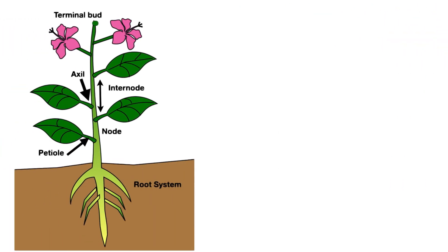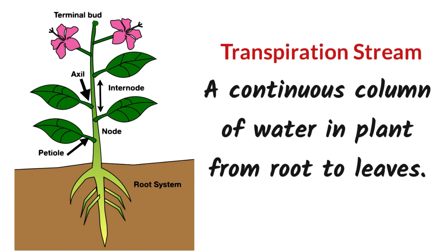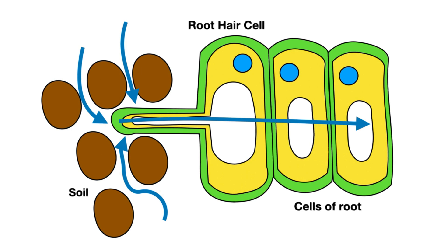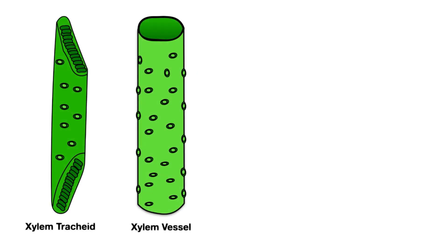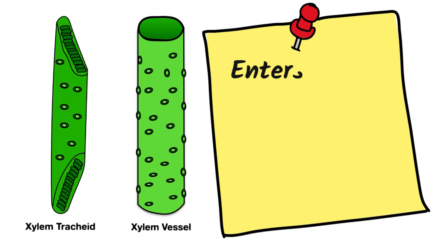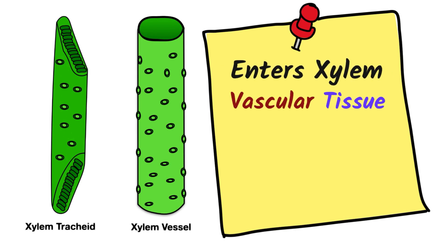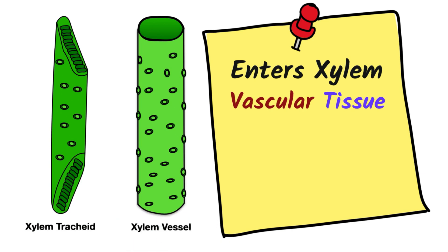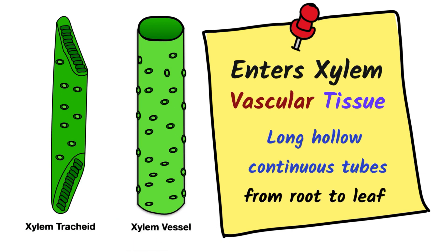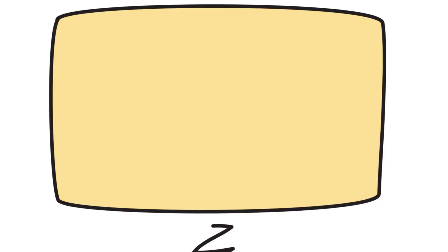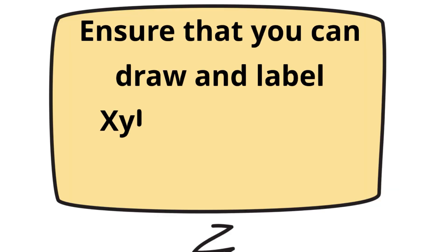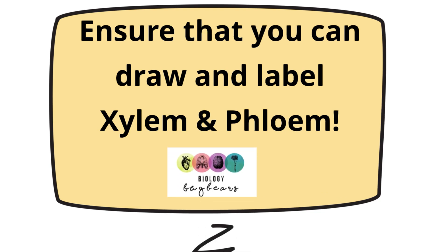Ensuring a continuous flow of water from root to leaf is very important. This is known as the transpiration stream — a continuous column of water in the plant from root to leaves — and it's important for photosynthesis. Water enters plants at the roots, absorbed by osmosis, and moves from cell to cell until it enters xylem, the vascular tissue at the centre of the root. Xylem tracheids and xylem vessels form long hollow continuous tubes from root to leaf. Remember that xylem is dead and reinforced with lignin, so make sure you can draw and label diagrams of xylem and phloem.